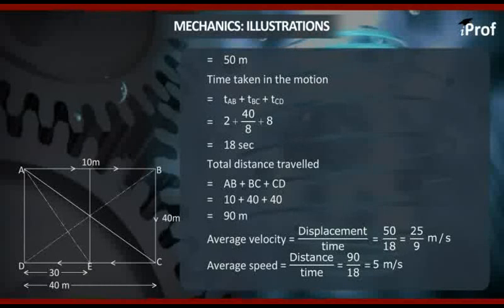Total distance travelled equal to AB plus BC plus CD equal to 10 plus 40 plus 40 equal to 90 meter.